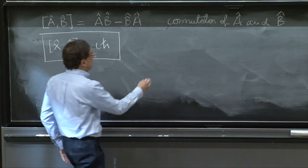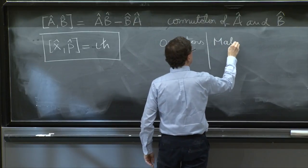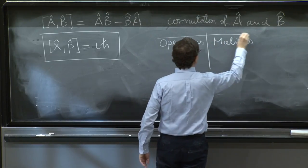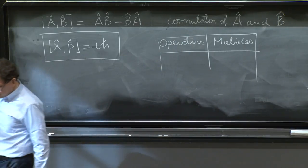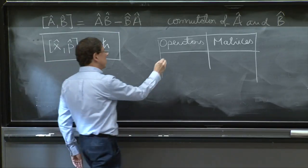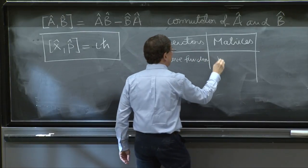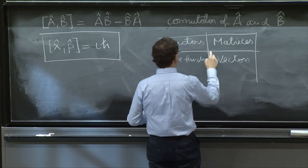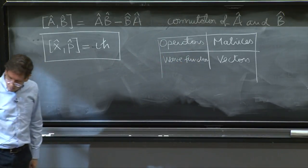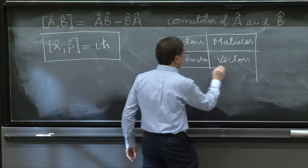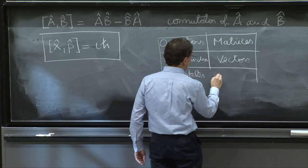We have an analog. So we have operators, and we think of them as matrices. In addition to operators, we have wave functions, and we think of them as vectors. The operators act on wave functions or functions, and matrices act on vectors. We have eigenstates, and eigenvectors.